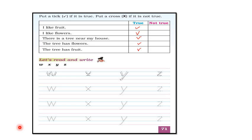Right, the first one is 'I like fruits.' Yes, I like fruits and all of you also like fruits, so we can put a tick mark here. The next one is 'I like flowers.' Yes, most of us like flowers, so we can put a tick mark here also.